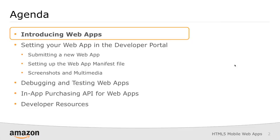I'm going to start out by giving you an overview specifically of what web apps are. Then I'll walk you through the developer portal today and we'll go over what some of the changes are for web apps. Web apps, if you've submitted an Android app before, are very similar. There are just a couple of steps that differentiate web apps from Android apps. I'll also show you how to debug and test your web apps. You've probably already debugged and tested your mobile website — you can use the same exact tools today, whether you're using an IDE or Chrome debug tools, and then you simply point the developer portal to where your website is.